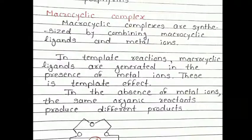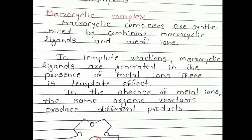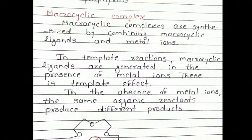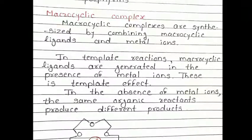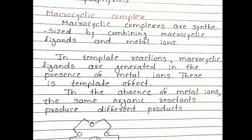If a metal ion is not present, then the macrocyclic ligand will not form. In the absence of metal ions, the same organic reactants produce different products — some linear compound or a different product altogether.